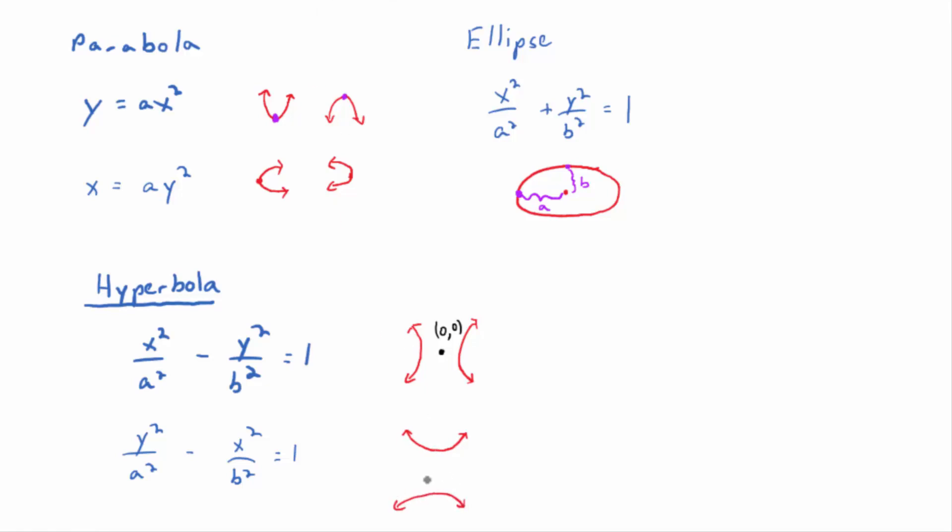So you absolutely have to be familiar with how to graph parabolas, ellipses, and hyperbolas to graph quadric surfaces. Because the traces, the cross sections that you get, the two-dimensional cross sections of the surface in three dimensions, turns out to be one of these shapes every time, if it's a quadric surface.